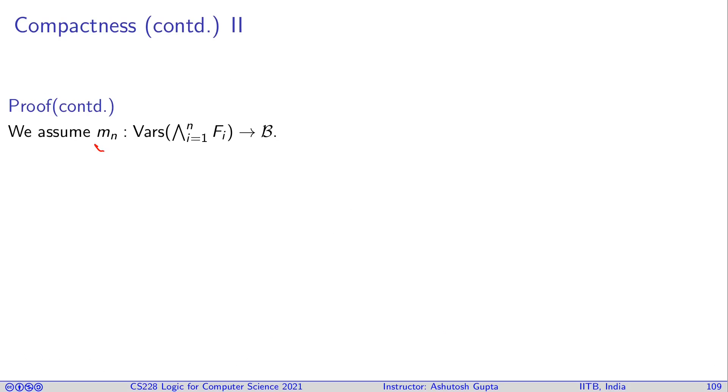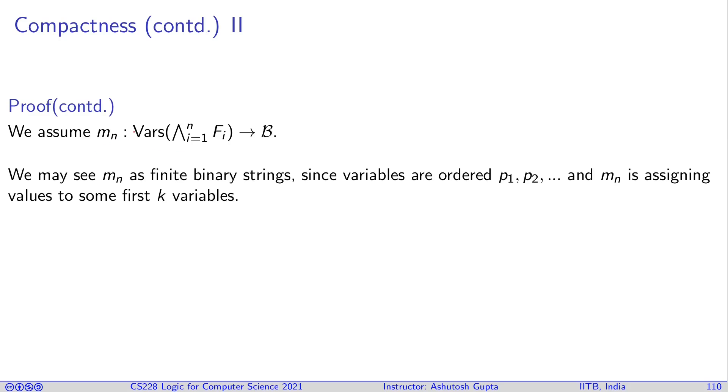We assume M_N only talks about those variables that are occurring in the formula. It doesn't talk about anybody else. Original definition of our models did talk about all the variables that are potentially in your system. But let's restrict our definition here. Because this gives you finite strings and the previous theorem was talking from finite to infinite strings. So that's why we want to use this variation. So we may see M_N as finite binary strings. Since variables are ordered P_1, P_2, M_N is assigning values to some first k variables. So let's suppose first N formulas have k variables. So then M_N would be assigning values to that many variables and put them in a sequence of 0 and 1. And that will give you a string.